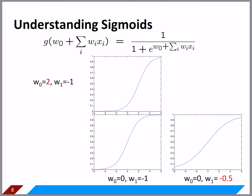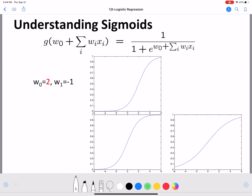Understanding the sigmoid: we have 1 divided by 1 plus e raised to w0 plus the sum over i of wi*xi. For different combinations of w0 and wi, the curve looks different — similar to how the beta distribution looks different with different parameter values. This is how the model attains its modeling capabilities. If your weights are learned to fit the data correctly, the shape of the curve gives you better performance.